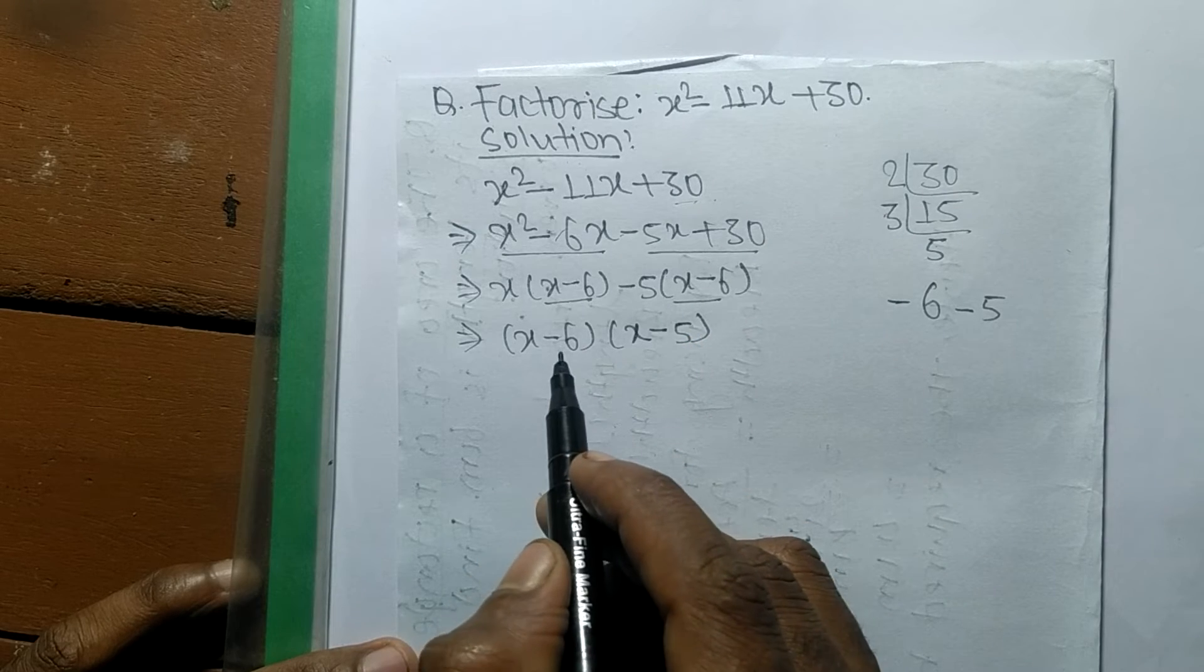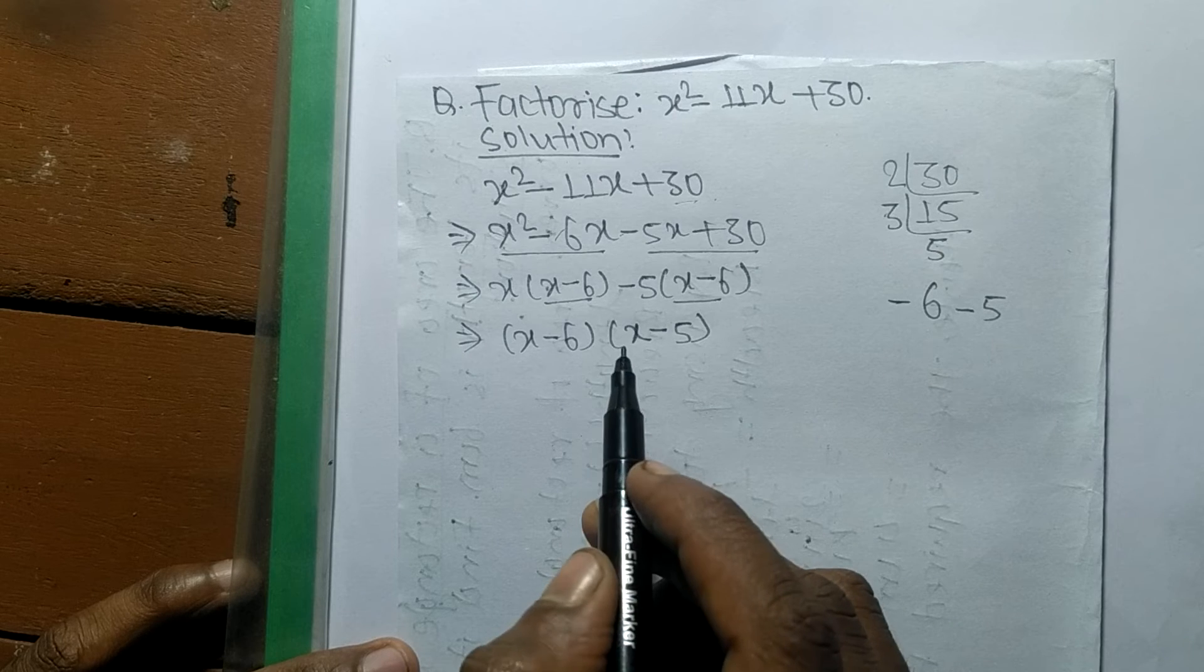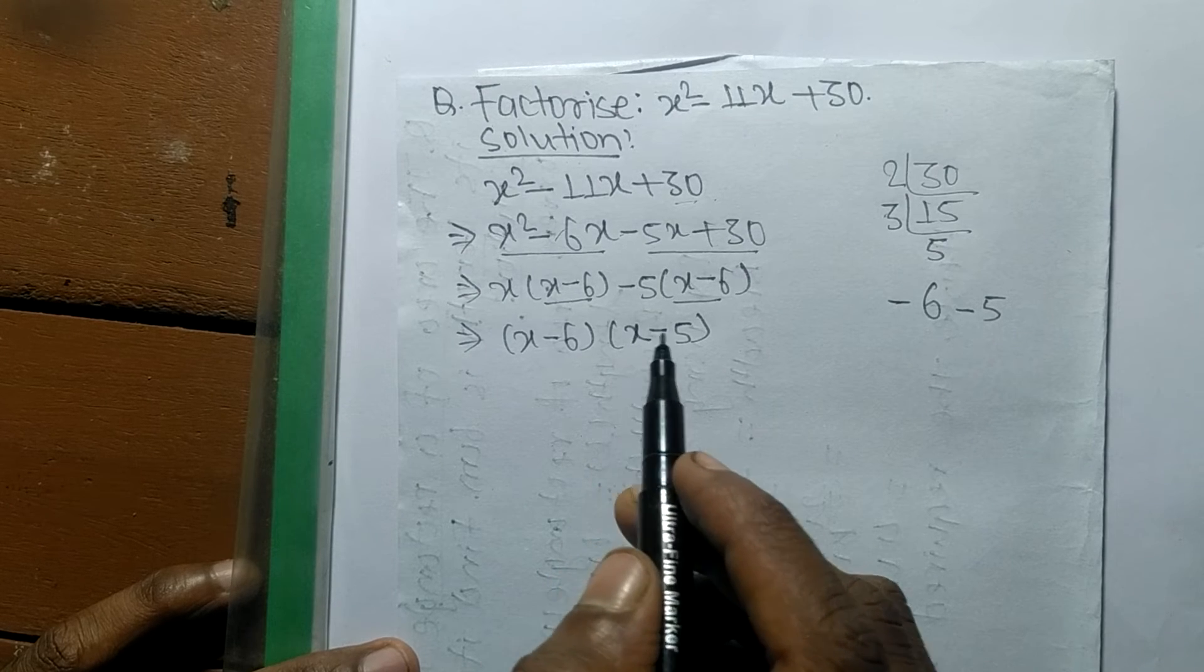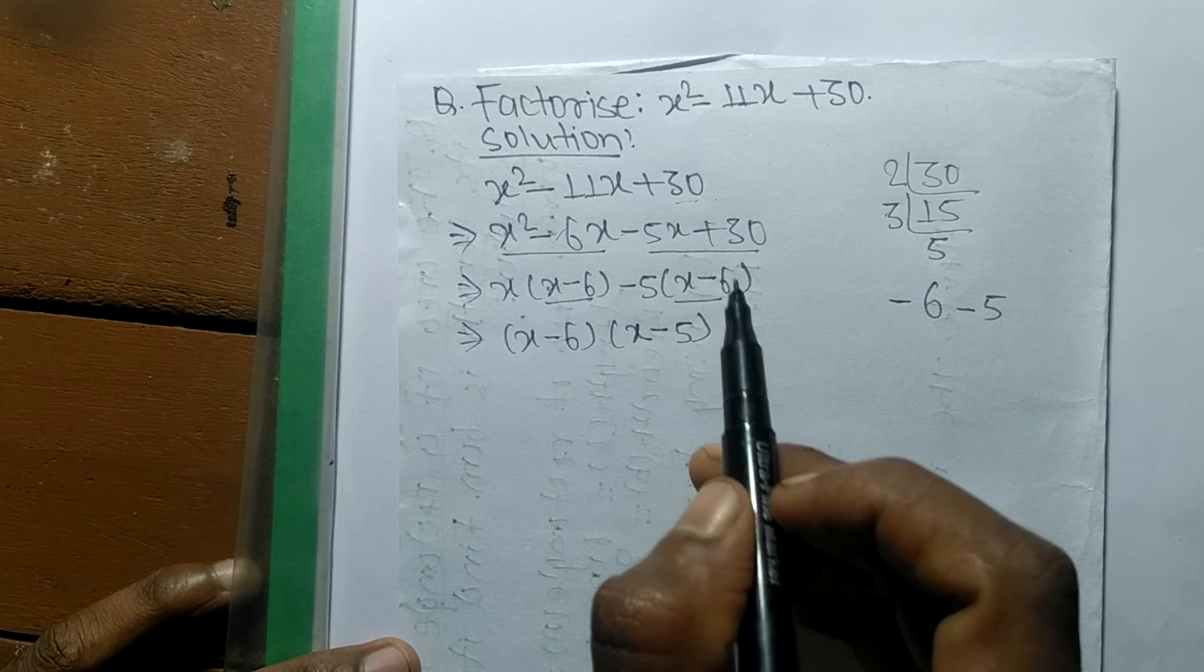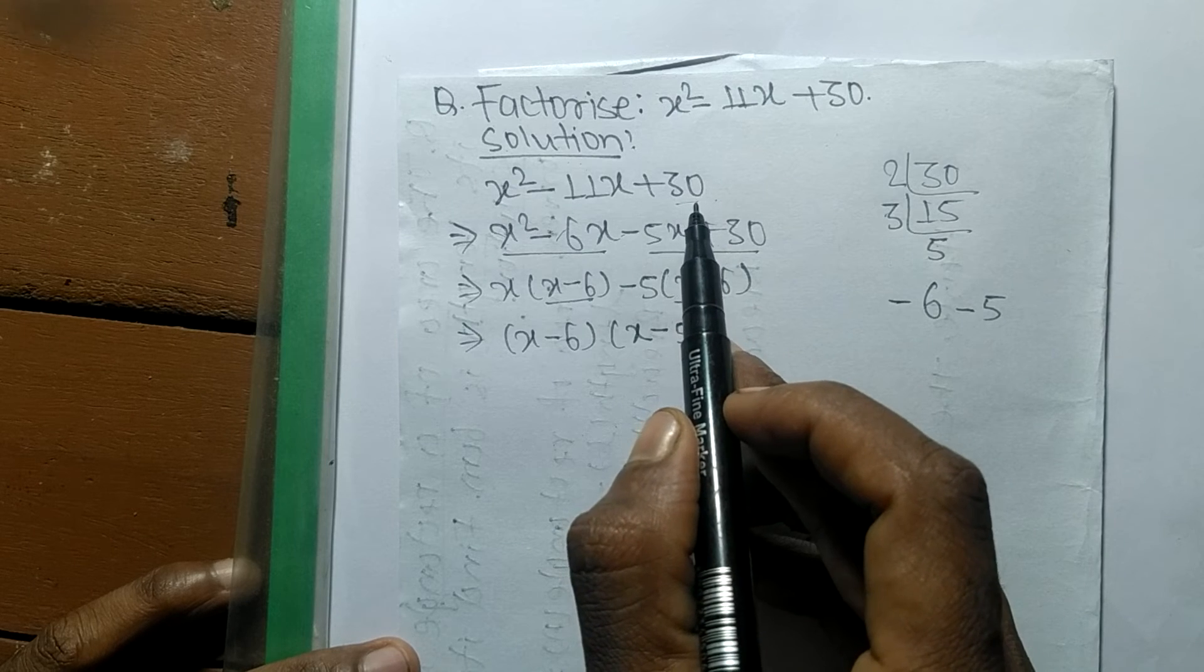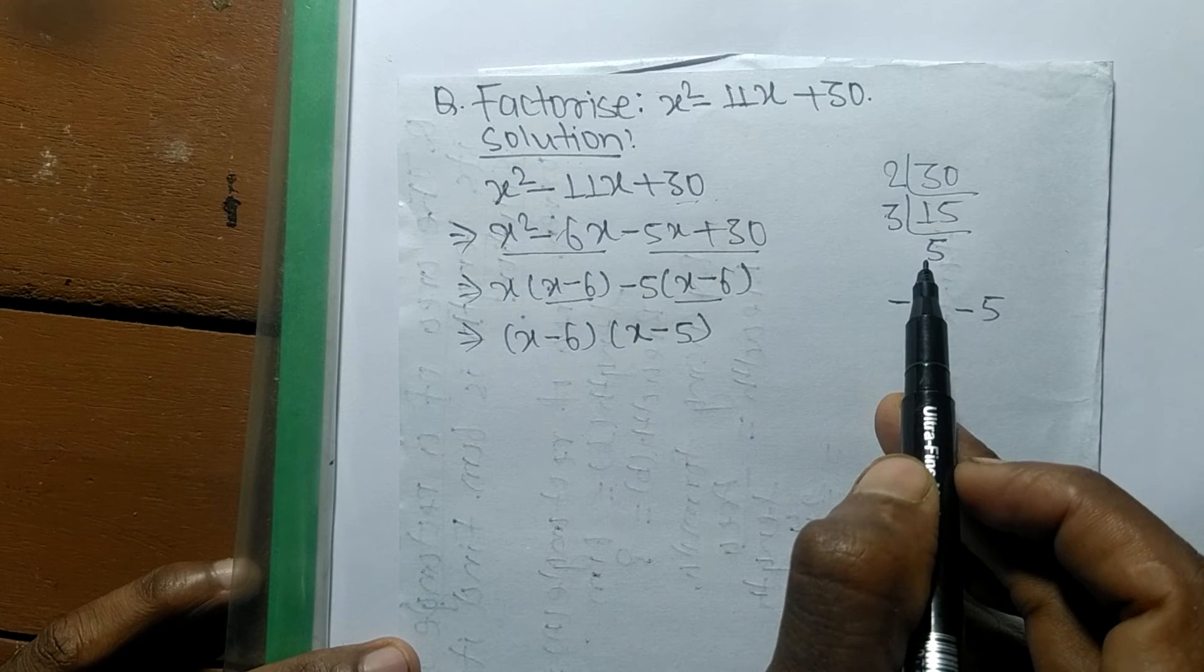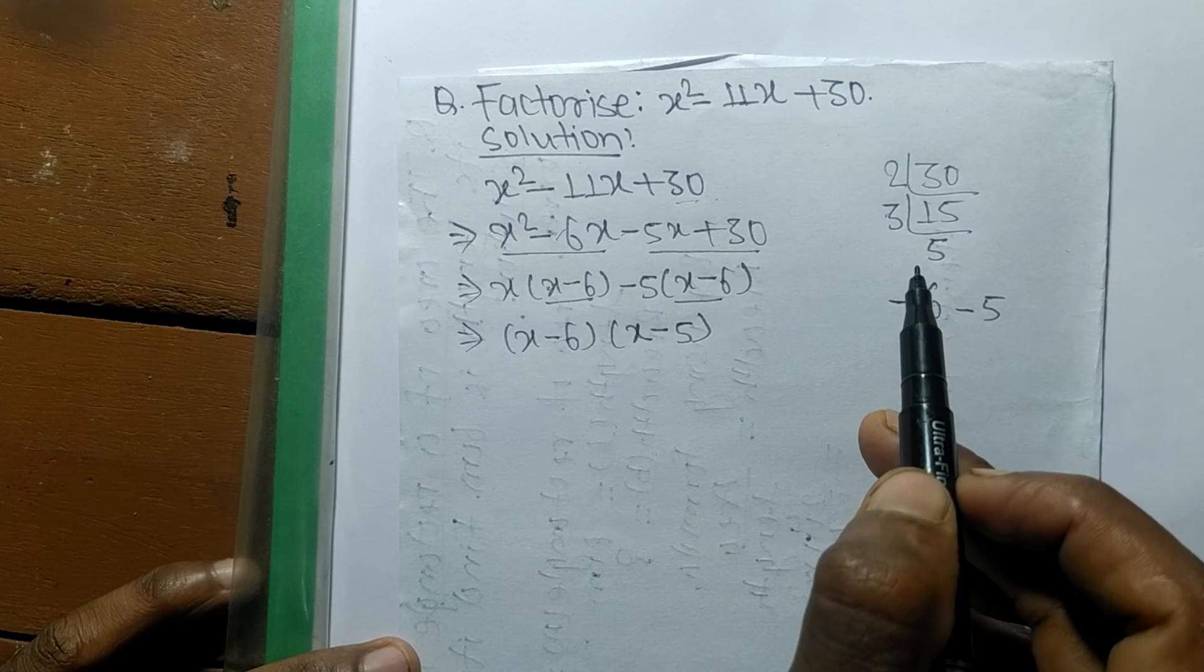In this way we can find the factors of any expression. We have to just remember: first, find the prime factors of the last number, and then by multiplying the prime factors, find such numbers that by adding them we get the middle term.